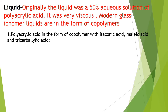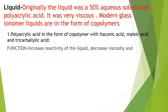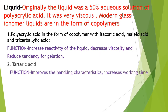Regarding the liquid component: originally a 50% aqueous solution of polyacrylic acid was used, which was very viscous. Modern glass ionomer liquids are in the form of copolymers — polyacrylic acid as a copolymer with itaconic acid, malic acid, and tricarboxylic acid. These copolymers increase the reactivity of the liquid and reduce the tendency for gelation.